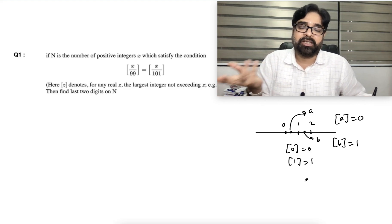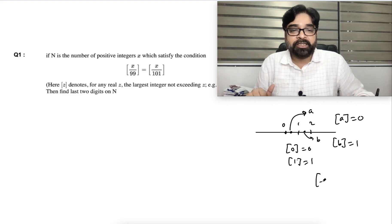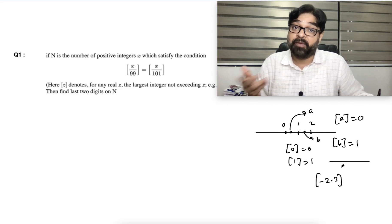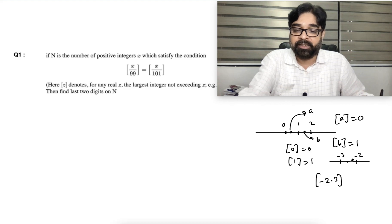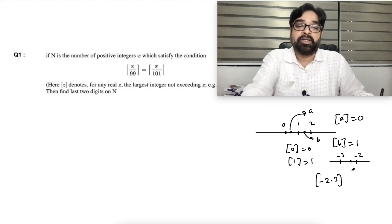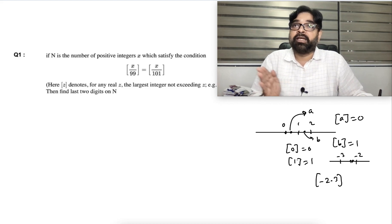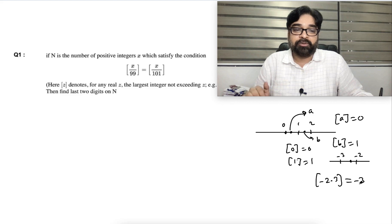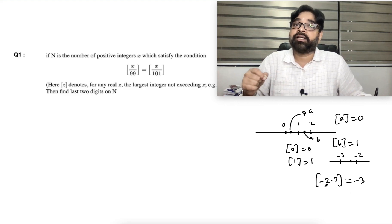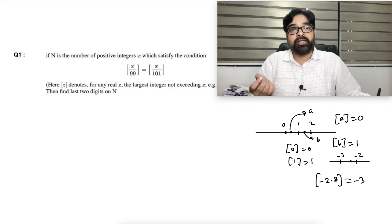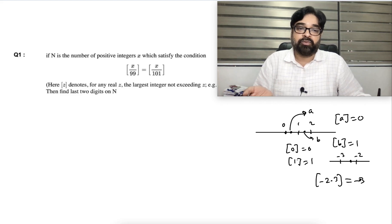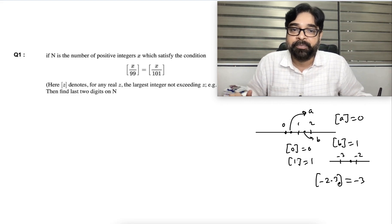Suppose I say: what is the greatest integer of -2.3? First, decide where -2.3 lies — it's between -3 and -2. The greatest integer takes the left side integer, so the answer is -3. Children often make the mistake of saying -2, but it's not -2; the left side integer of -2.3 is -3.